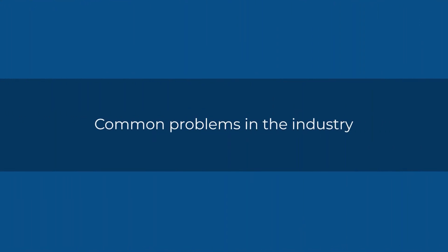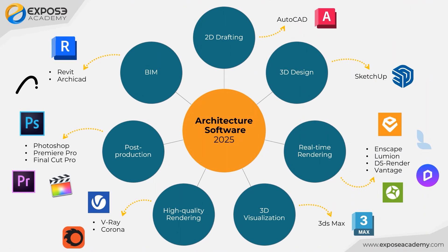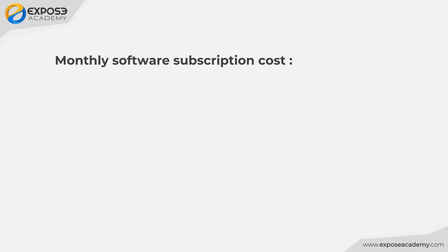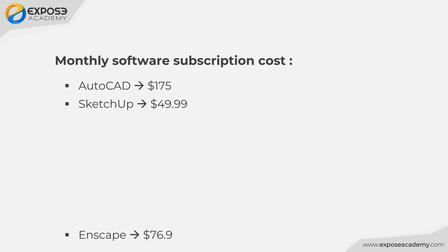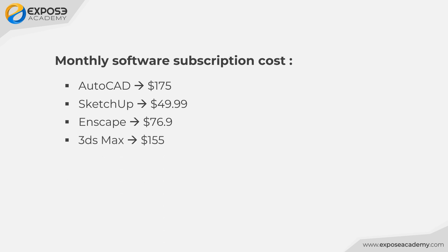The most common problem faced by the design industry is the high price of software subscriptions. Suppose you are an architect or interior designer who uses all 7 categories of software. First, you have to pay for an AutoCAD subscription at $175 per month, then SketchUp at $49.99 per month, and Enscape at $76.90 per month, then 3ds Max at $155 per month,